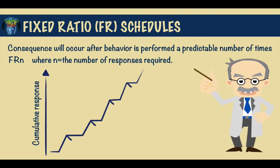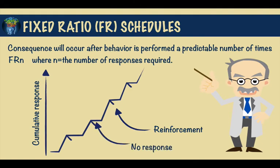As you can see, the schedule usually produces rapid rates of responding with short post-reinforcement pauses, and the length of the pause is directly proportional to the number of responses required. The small vertical slash indicates reinforcement; the horizontal section indicates no response, and the diagonal portion shows a constant higher rate of response. So on an FR schedule experiment, an animal typically responds in bursts after reinforcement pauses, then begins responding again at a higher constant rate.